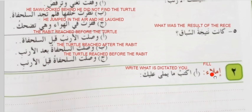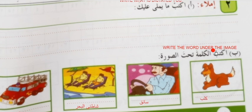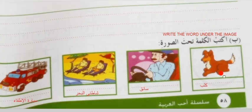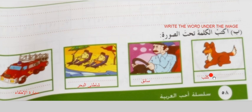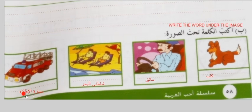This is the next exercise. Imla means fill. Iktib — write. Ma yamli alaik — what is dictated to you. Yamli means dictated. Iktab kalma tahtul surati — write the words under the images. This is kalb. This is sayak — driver. Shati al-bahar — the cornish or the beach. Sayyara itfah — this is the fire engine.